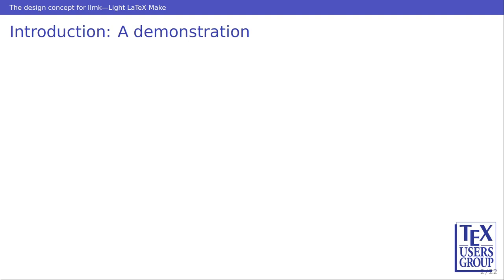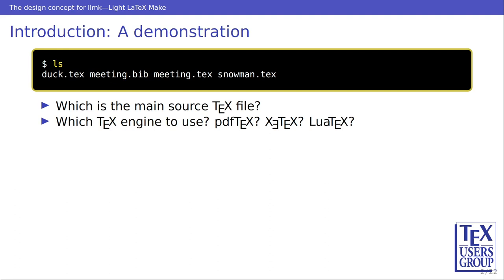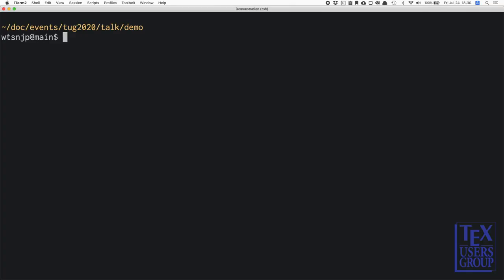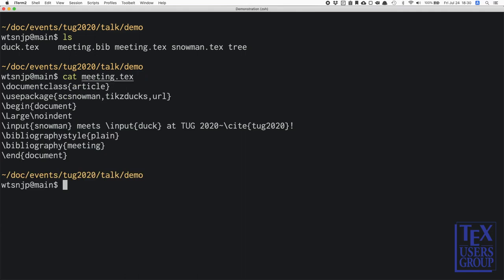First, I would like to give you an introductory demonstration. Suppose we have these TeX documents from the author. Can you guess how you can build these TeX documents? It is not necessarily obvious, because we don't know which is the main TeX source file, which TeX engine to use — pdfTeX, XeTeX, or LuaTeX, or else — and also we don't know what build program to use. Maybe for this really simple example, it is easy to observe files and find out that this meeting.tex is the main source file.